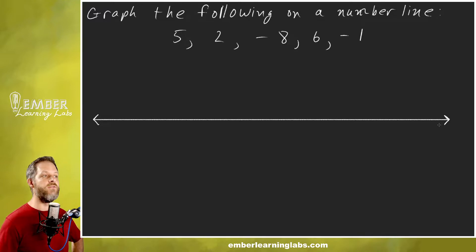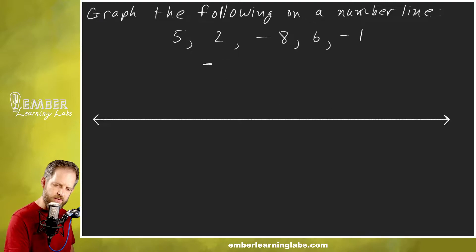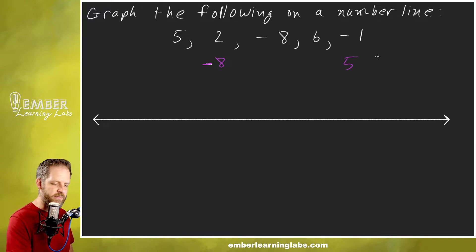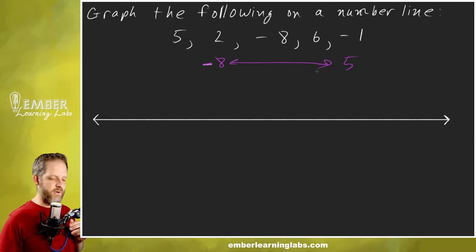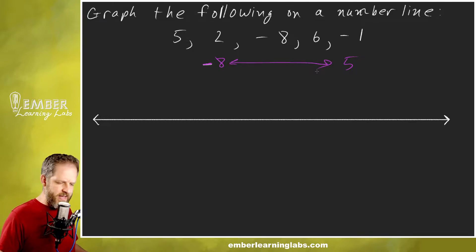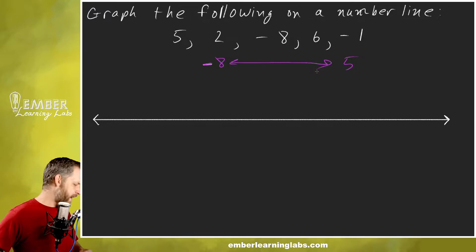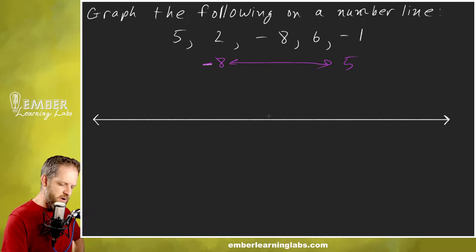Now I like to see where our numbers are. The smallest number on this list is negative 8 and the highest is 5, so we're going from negative 8 up to 5. We're pretty centered around zero, so I'll put zero kind of in the middle.